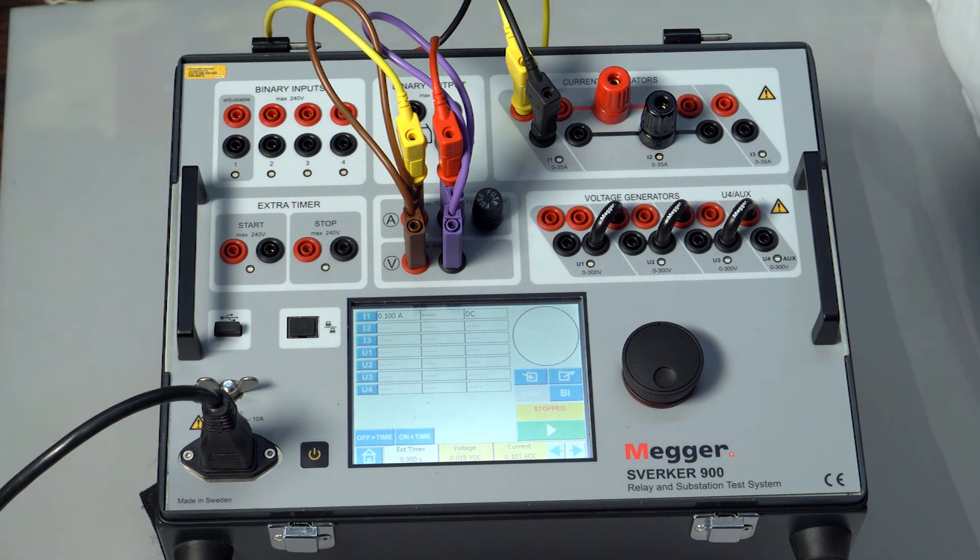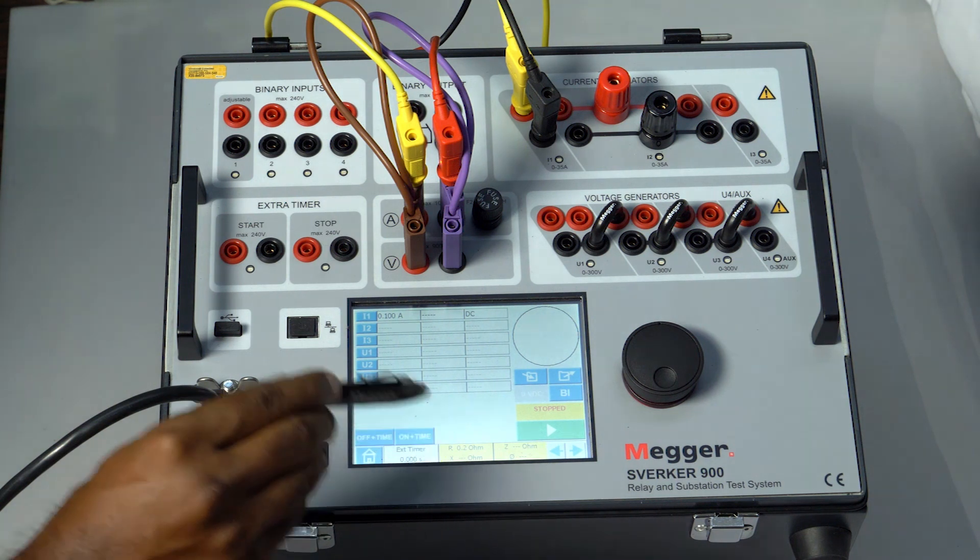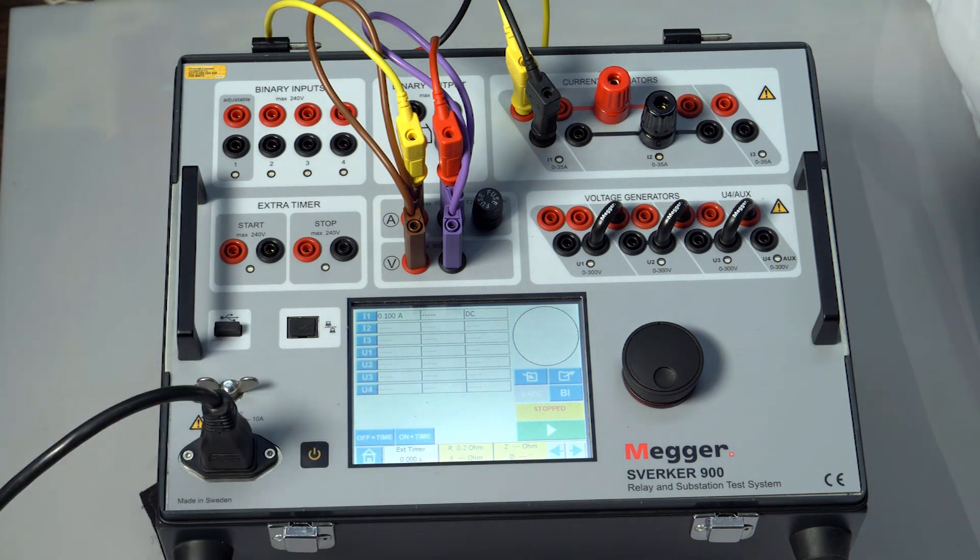By pressing this arrow mark, we can also see the resistance directly here. However, calculations will give you more accurate results based on the number of decimal points.